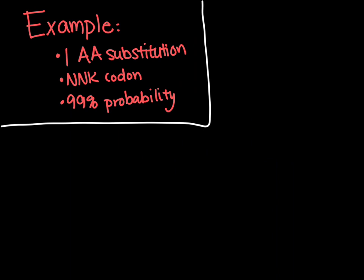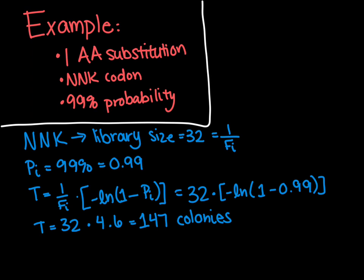Let's go through a brief example. If we are making one amino acid substitution using an NNK codon and we want to ensure with a 99% probability that we have screened every mutant, we can calculate the number of colonies we need to screen like this. Because we are using an NNK codon, our library size is 32, like we said before, so that is equal to 1 over fi.